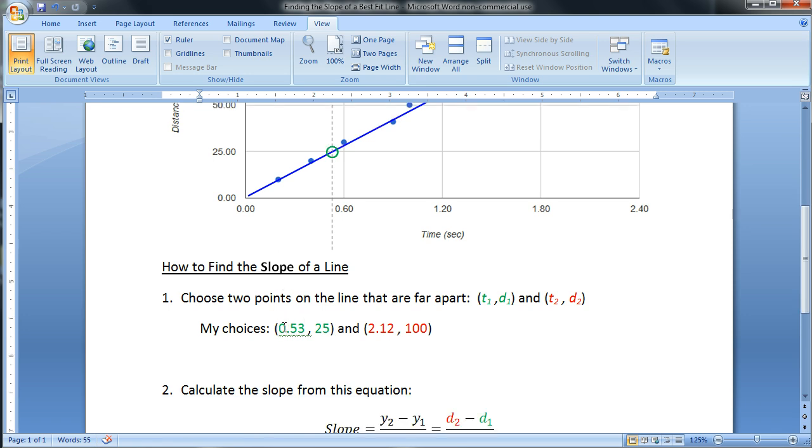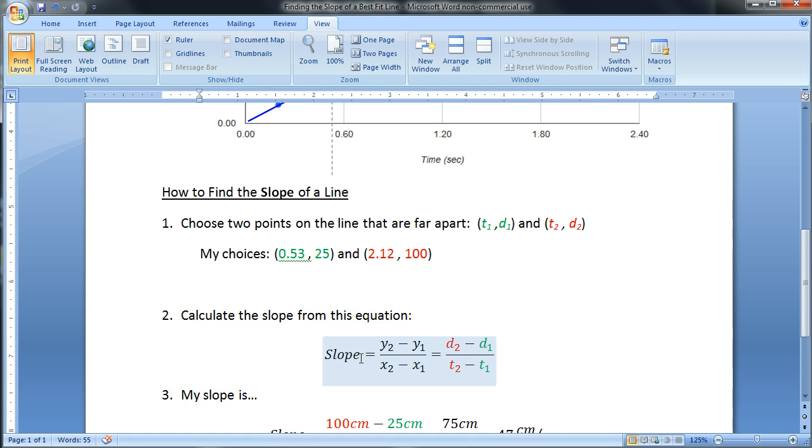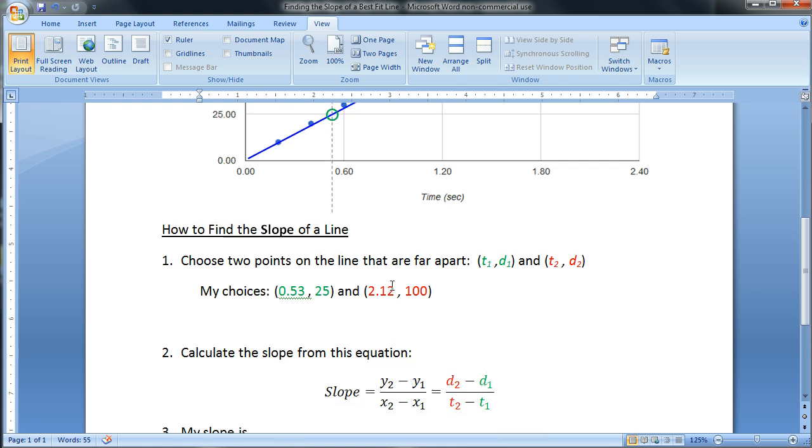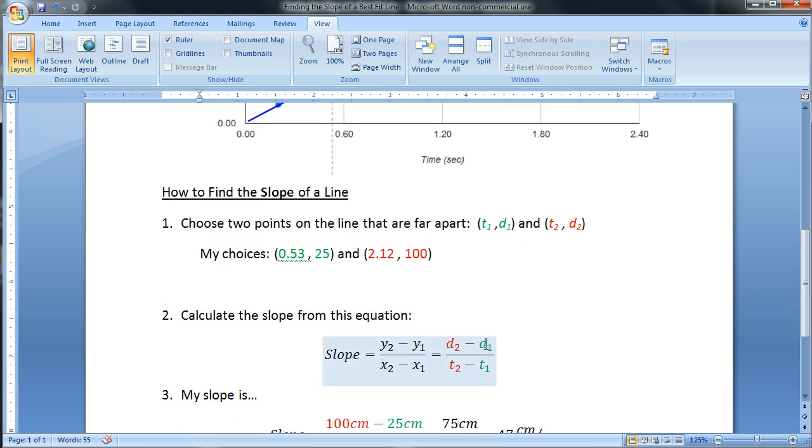So what to do with these points? Now that we have them, we're going to use the slope equation that we learned in math class. The slope is the difference in the y values divided by the difference in the x values. Our y values for our data is distance - the vertical axis is distance. So I have a difference in our distance values divided by the horizontal axis, time, the difference in our time values.